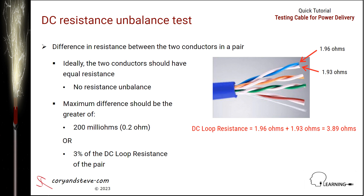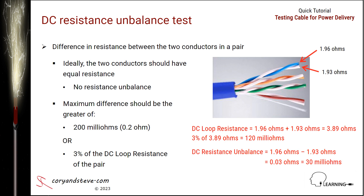In the example shown, 3% of the 3.89 ohm DC loop resistance is 120 milliohms. So the pair passes the test with 30 milliohms, which is lower than the maximum allowable 200 milliohms.